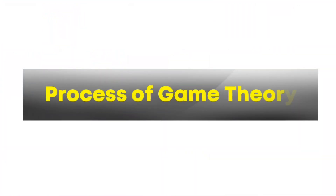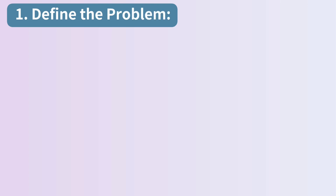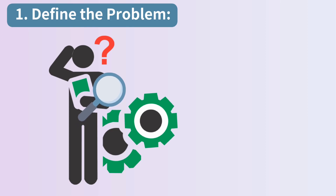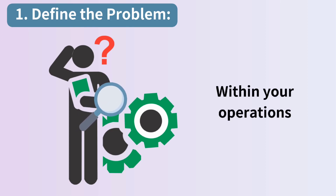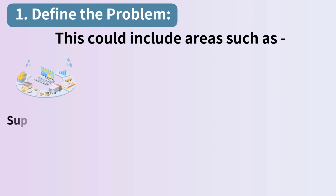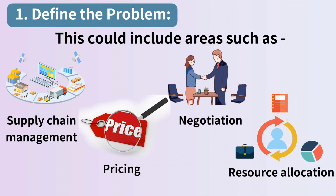Process of game theory. Here's a general process of applying game theory in operations management. Step 1: define the problem. Begin by identifying the specific problem or decision-making scenario within your operations that you want to address. This could include areas such as supply chain management, pricing, negotiation, resource allocation, and more.